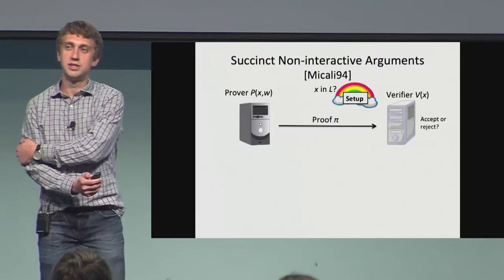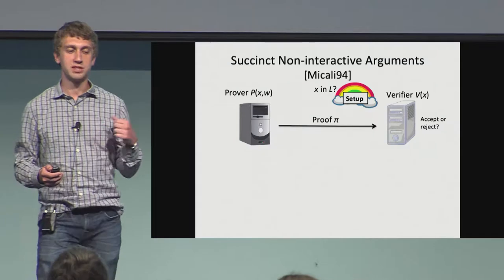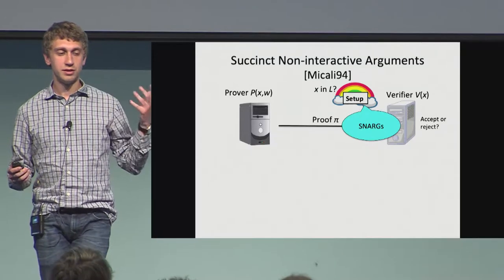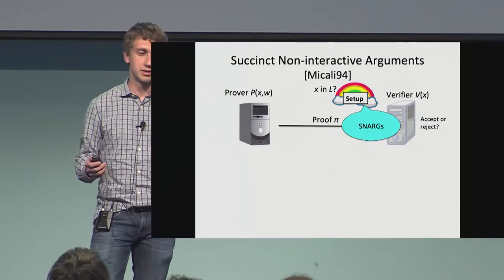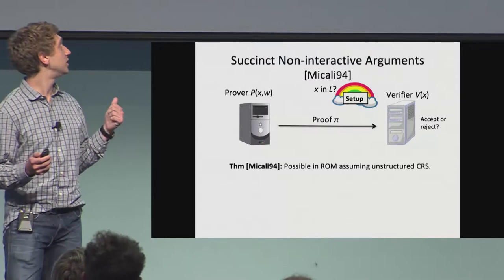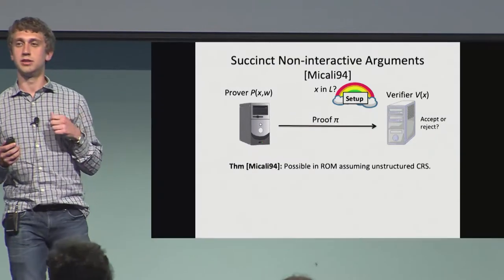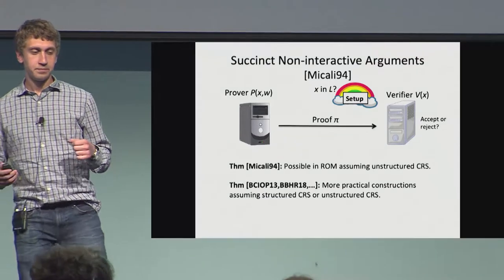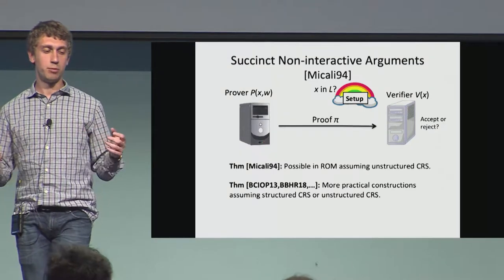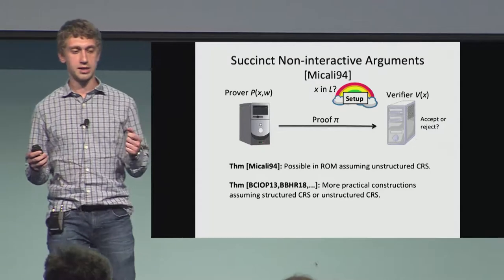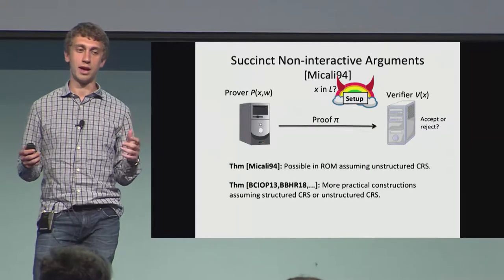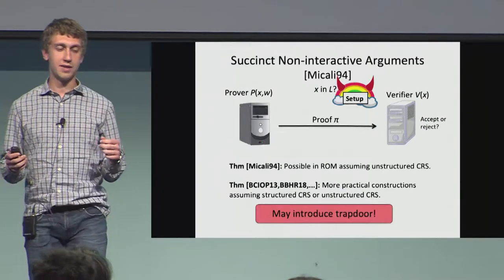One way around this is to introduce a trusted setup, which could be a structured setup with a common reference string or an unstructured setup with a common random string — this notion is usually referred to as SNARGs. Micali in 1994 showed with his computationally sound proofs that this notion is possible in the random oracle model, assuming just an unstructured common random string. Because this notion is so useful, there are many more practical constructions assuming either structured or unstructured setup. But in all these scenarios, the setup needs to be trusted in some way, although it could have been adversarially generated to introduce a trapdoor.